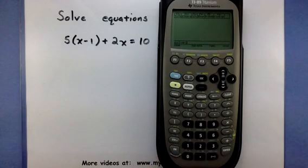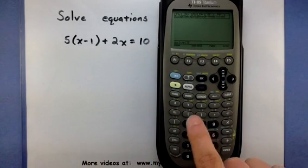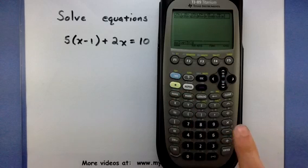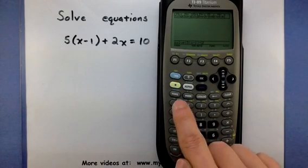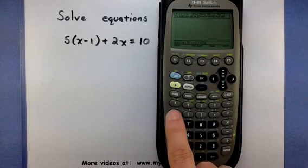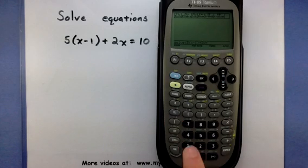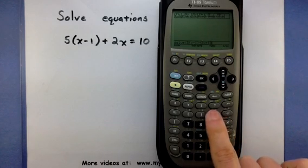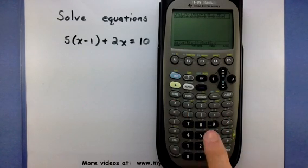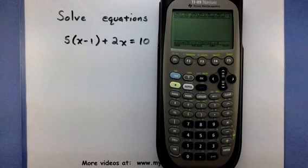Now we want to enter our equation in. So 5, parentheses, x minus 1, close parentheses, plus 2x, and then here's your equals button, and 10. Now that's the entire equation, but we have to enter in just a little bit more, put a comma x, and then close the parentheses for solve.